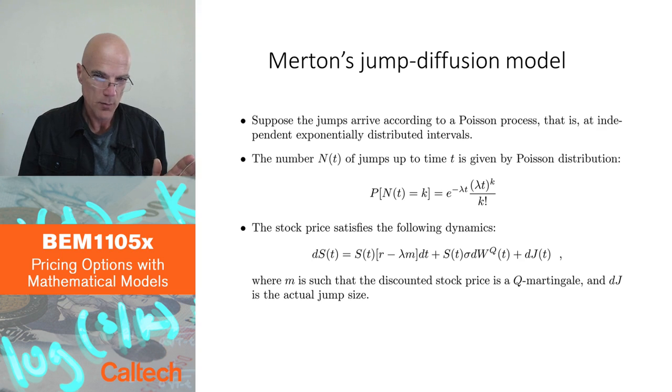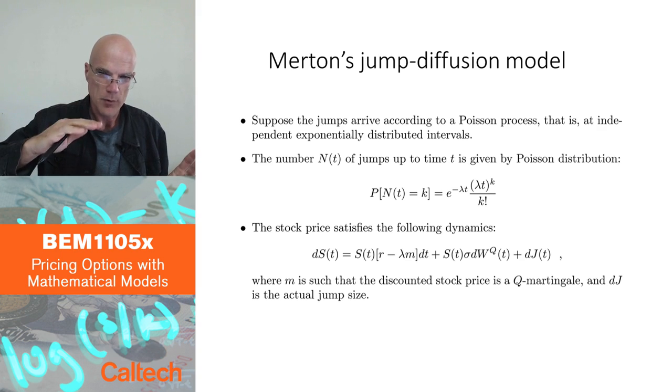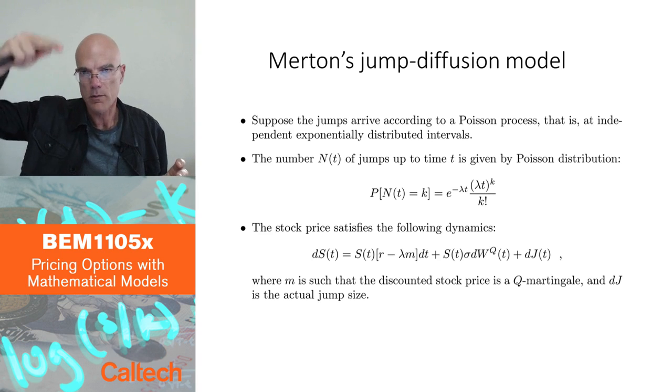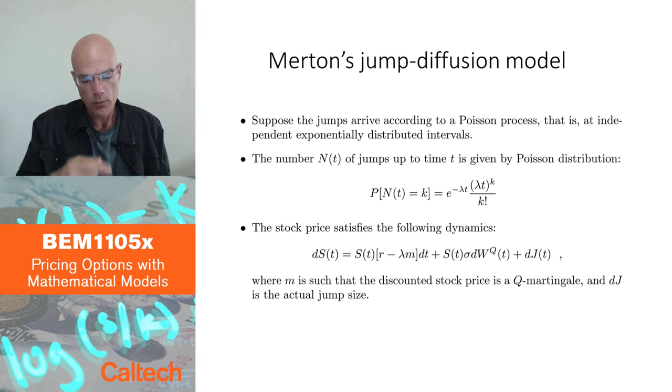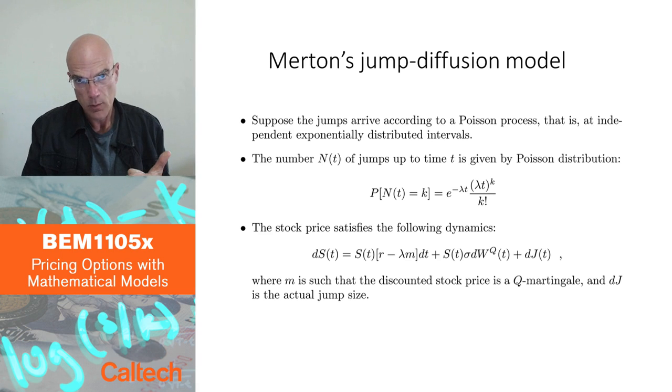So that's called the Poisson process. Poisson process is a counting process. It would count number of jumps after first exponential time, one jump, two and so on, two jumps after two periods and so on. So you have to model that, and then you also have to model the size of the jump.